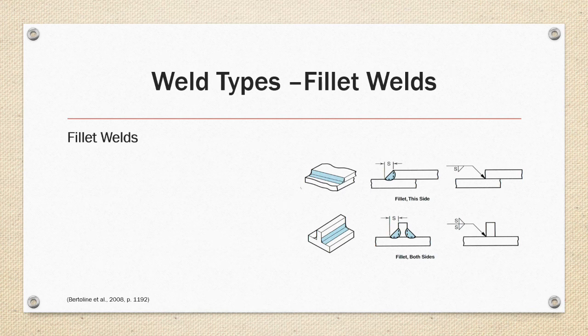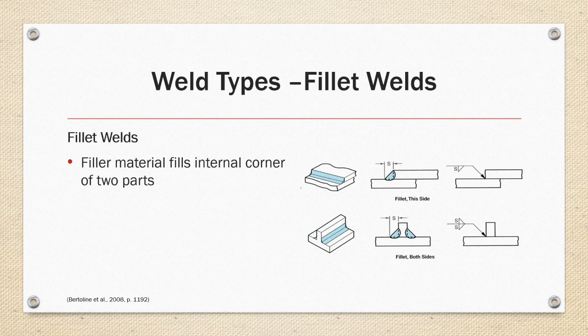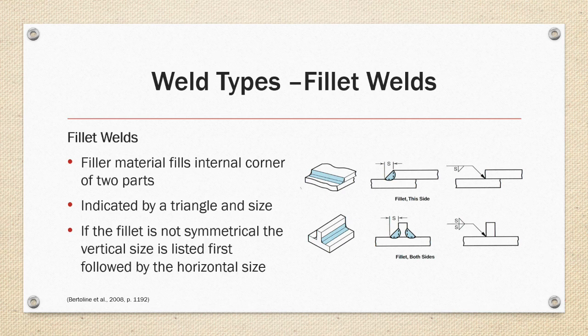Fillet welds are a common weld type where filler material fills in an internal corner of two parts, as shown on the right. Fillet welds are indicated by a triangle symbol with a size dimension. The letter S dimension occurs next to the symbol. If the fillet is not symmetrical, the vertical size is listed first, followed by the horizontal size. The first example shows a fillet weld in the corner on the same side as the arrow with a size of S. The second shows a fillet weld on both sides of the material edge referenced.